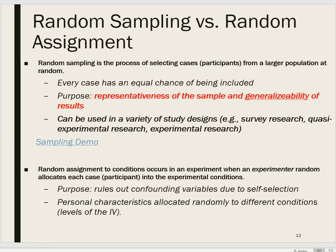On the other hand, random assignment to conditions is a process of assigning participants to conditions in an experiment. If an experiment has two or more levels, we want the people assigned to those levels to be probabilistically similar. We don't want to let people choose which condition they're in, because people who self-select into condition A versus condition B may differ from the start, and that difference could explain any observed effect on the dependent variable. We use random assignment to control for participant-related variables and rule out self-selection.